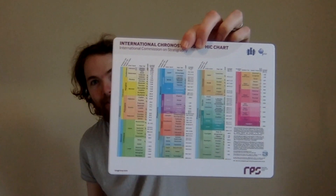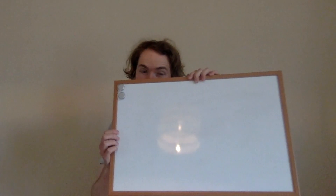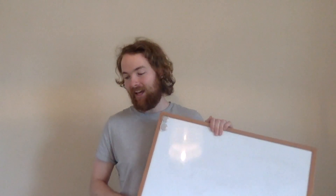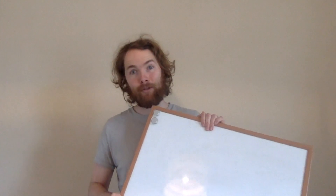So we're going to need a few things to help us — we're going to need a timescale so we can track ourselves through geological time, and a whiteboard so I can show you what's happening. We're going to cover three of the main tectonic events that have shaped the United Kingdom. Firstly we'll go through it with the whiteboard method and then we'll go through it again with some more technical diagrams.